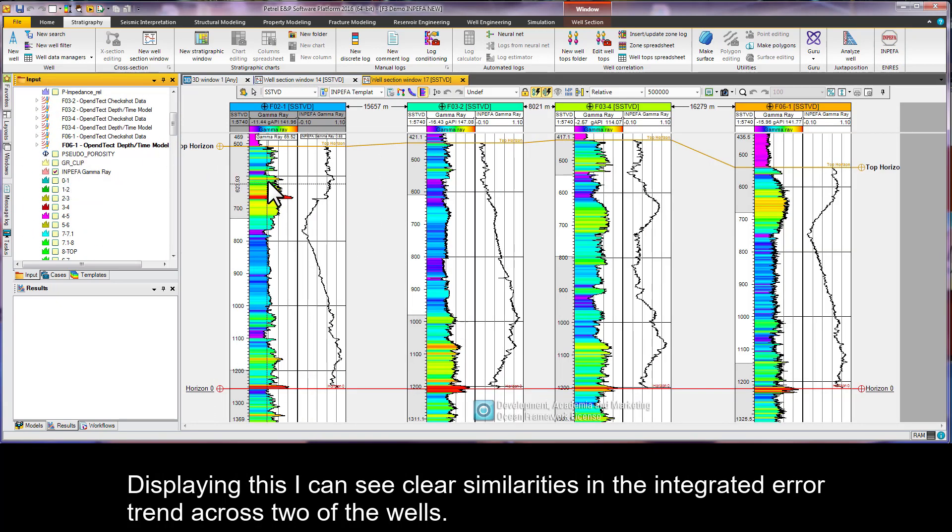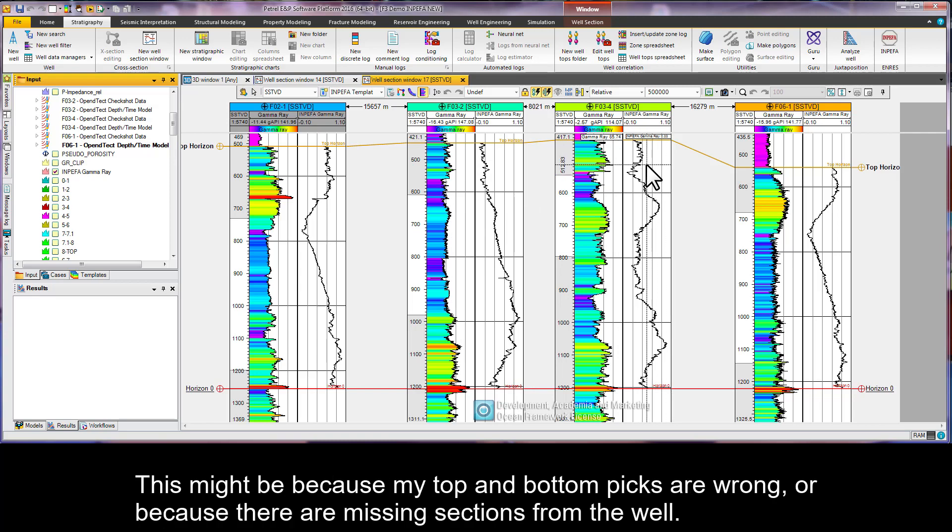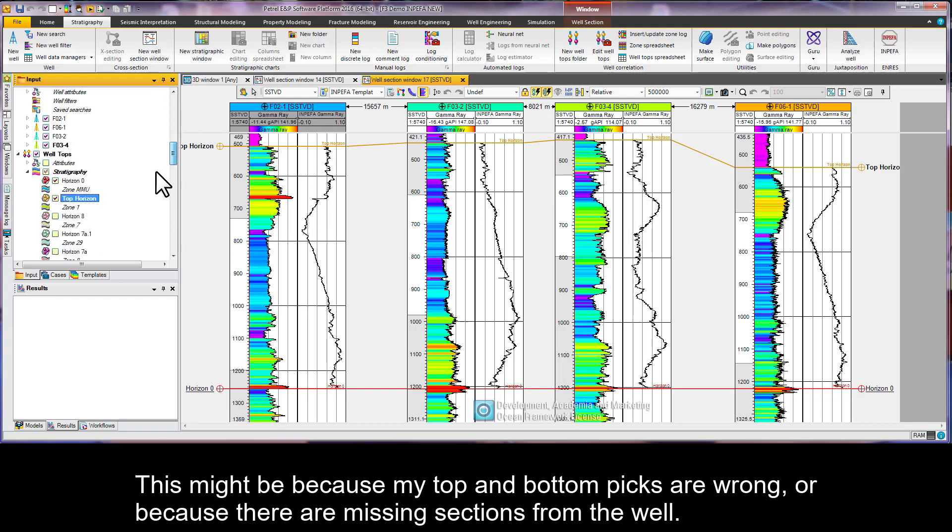Displaying this, I can see clear similarities in the integrated error trend across two of the wells. The bottom of all four well logs look similar, but the top of the middle two logs is quite different. This might be because my top and bottom picks are wrong, or because there are missing sections from the well.